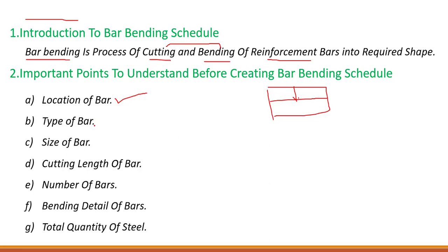Next, you need to understand the type of bar as well. From your main drawing, you need to understand which type of bar we are using. First, the location of the bar, then the type of bar, then we need to understand the size of the bar — which size we are using for this particular bar.